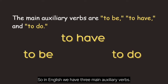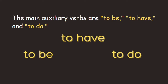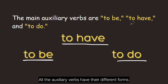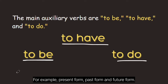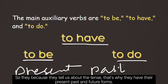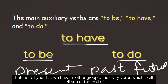In English, we have three main auxiliary verbs. The most used is 'to be', then we have 'to have', and then we have 'to do'. All the auxiliary verbs have their different forms — present form, past form, and future form. Because they tell us about the tense, that's why they have their present, past, and future forms. We also have another group of auxiliary verbs which I will tell you at the end of the video.